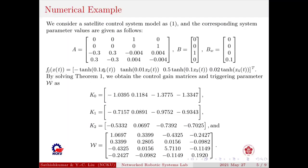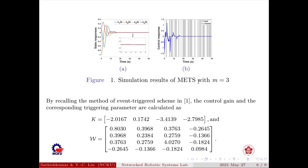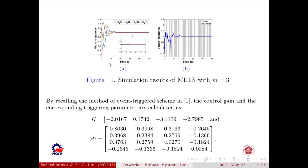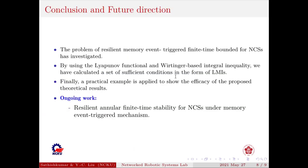By using the system parameter values and the control gain matrix values and triggering parameter values, we get the state response and control response of the memory event trigger scheme. By recalling the method of event trigger scheme in [1], the control gain and the corresponding triggering parameters are calculated as k and omega. By using these k and omega and the system parameter values, we obtain the state response and control response of the event trigger scheme in the work of [1]. Compared with figure 2a and figure 1a, figure 2a quickly converges to the equilibrium point, which shows that the superiority of the proposed memory event trigger scheme. Conclusion and future direction. The problem of Resilient memory event triggered finite time bounded for network control system has been investigated. By using Lyapunov function and relaxing the matrix inequality, we have calculated a set of sufficient conditions in the form of LMIs. Finally, a practical example is applied to show the efficacy of the proposed theoretical results. Ongoing work: Resilient asynchronous finite time stability for network control systems under the memory event trigger scheme. Thank you for your listening.